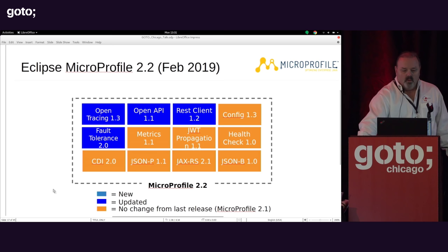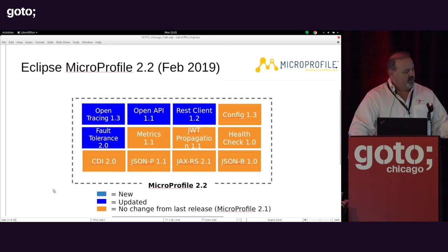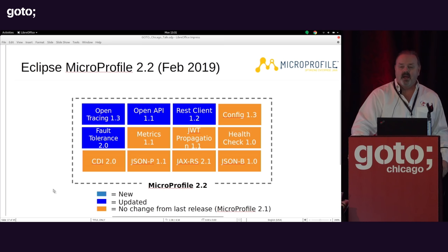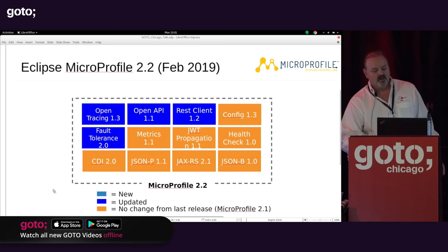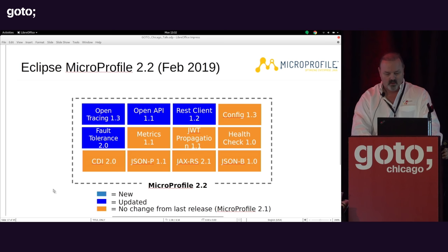MicroProfile defines sets of specifications for interoperability and APIs, starting from a core layer of four enterprise Java foundational APIs: CDI, JSON-P, JAX-RS, and JSON-B. On top of that, we define APIs for other feature sets interesting for microservice developers in the cloud. The rest of this talk covers eight feature sets: fault tolerance, metrics, JWT propagation, health check, config, REST client, open tracing, and open API.